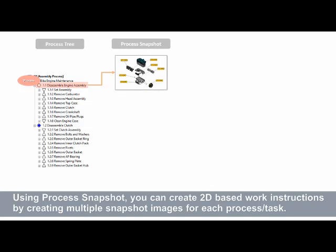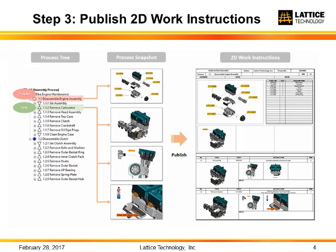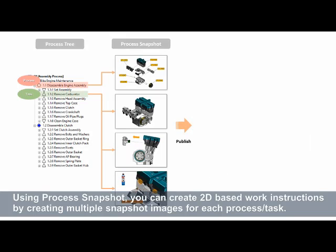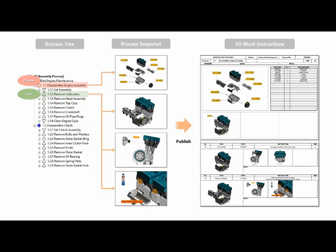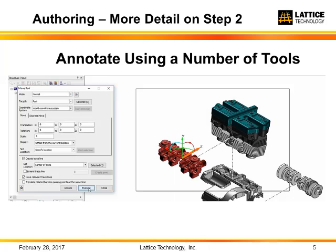Snapshots are the graphical building blocks for the work instructions. A snapshot can be attached to the process level, and each task can have one or more snapshots. Step three, publish the 2D work instructions using Microsoft Excel with user-defined templates. Here you can see the graphical representation of the task of removing the carburetor, the second task of this process. And that's it for the overview. Now let's go into more detail in step two, the authoring process.